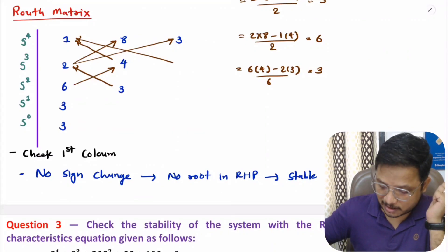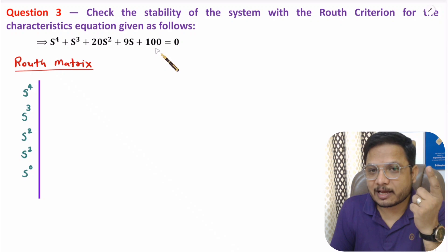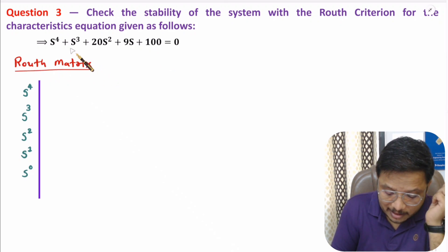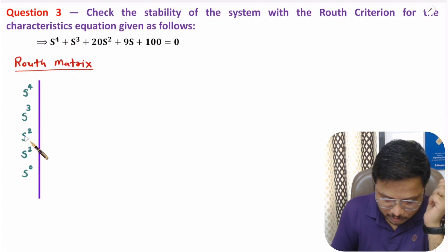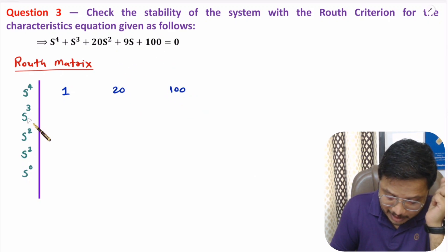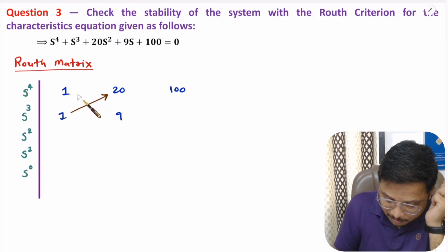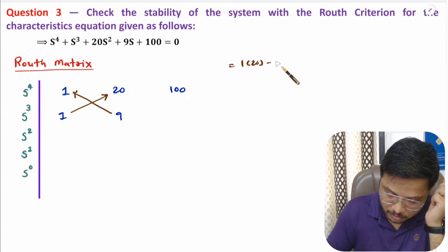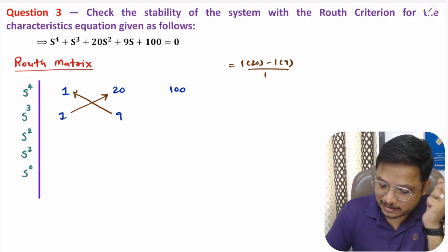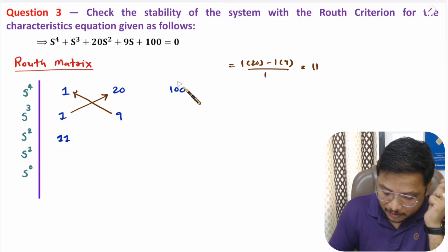Let us solve one more question. In the third question the characteristic equation is already given. We identify the Routh matrix — the highest order is s⁴, so we note s⁴, s³, s², s¹, s⁰. With s⁴: coefficient 1, skip, 20, skip, 100. With s³: coefficient 1, skip, 9, skip, 0. For the s² row first element: (1×20 − 1×9)/1 = 20−9 = 11. Since the s³ row has 0, we directly place 100 in the second position.